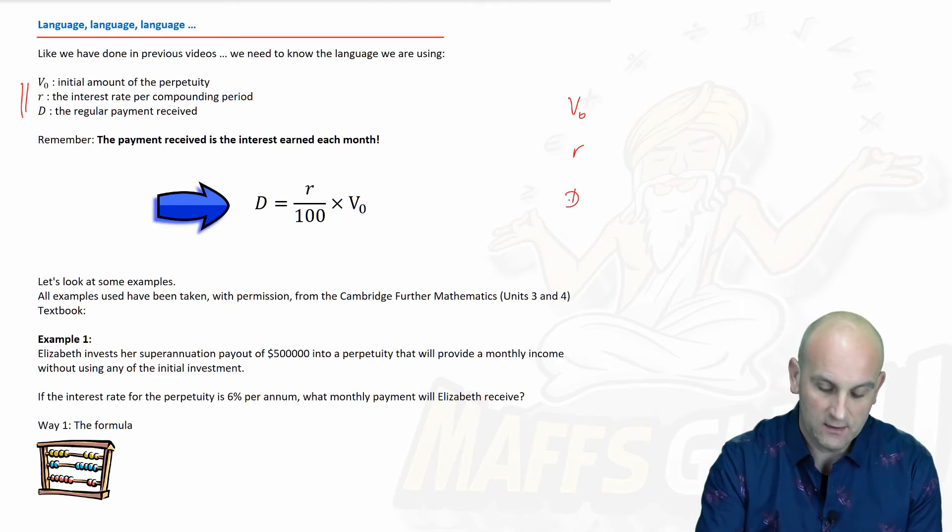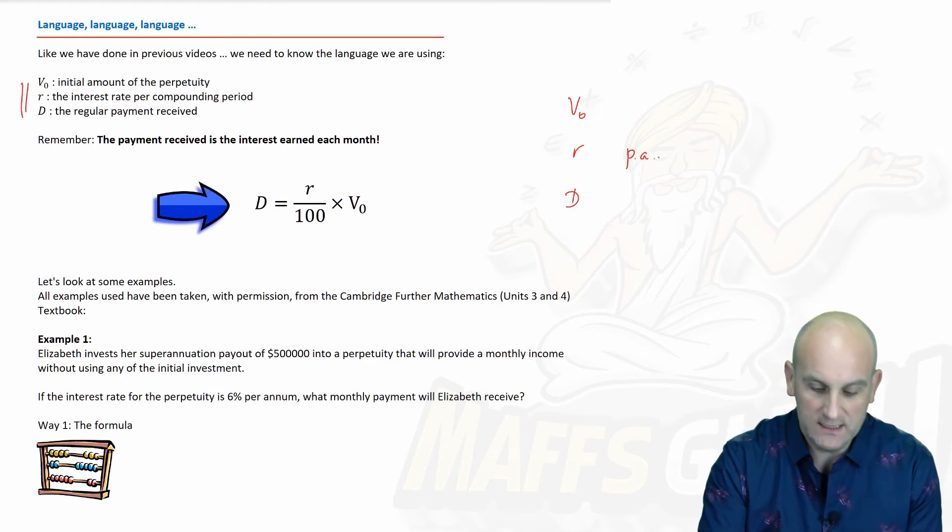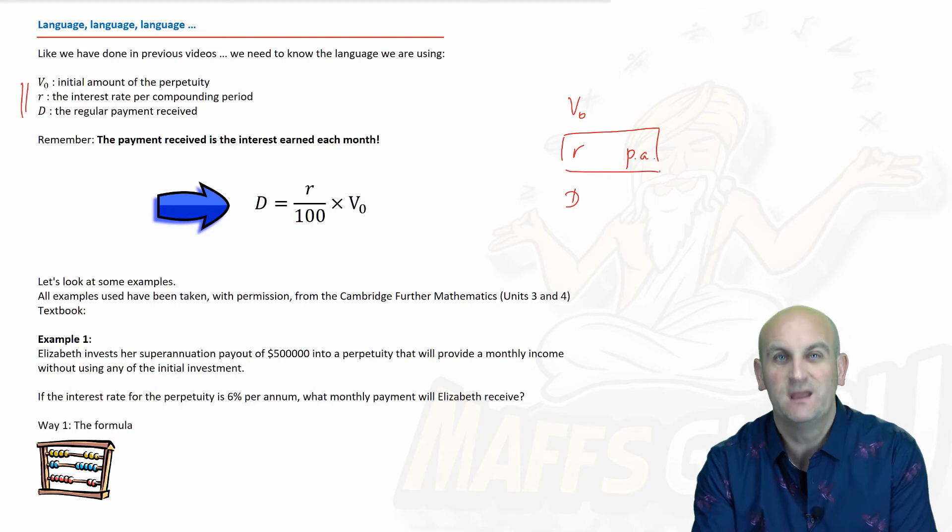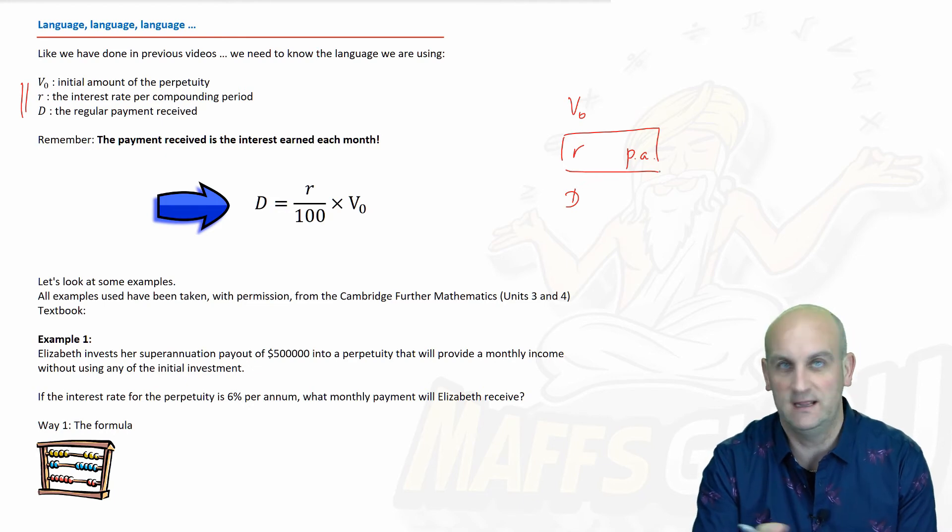Interest rates are given per annum, but generally speaking perpetuities will work out per month, so we need to make sure that when we're given this R, we turn our rate of interest into a monthly interest rate. If you're going to use the calculator, and I'm going to show you how, it's brilliant—it does all the hard work for you.